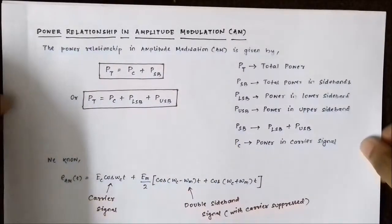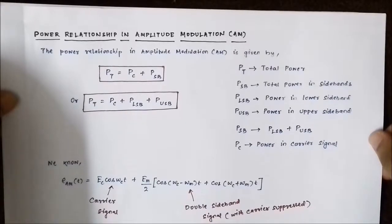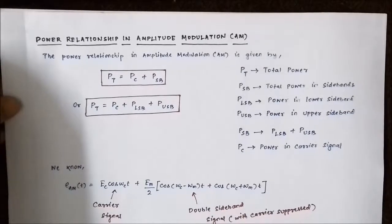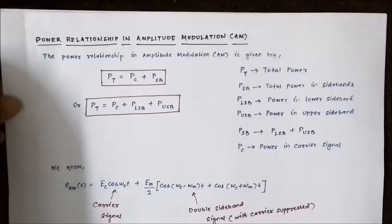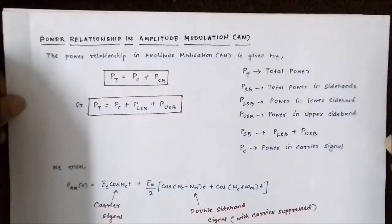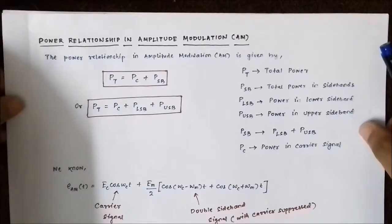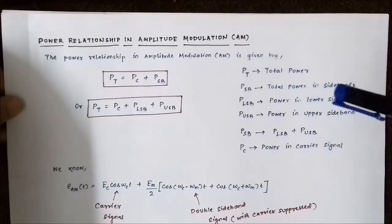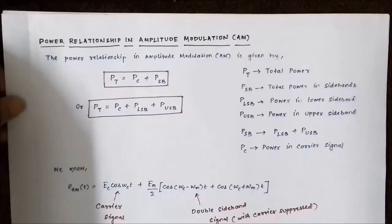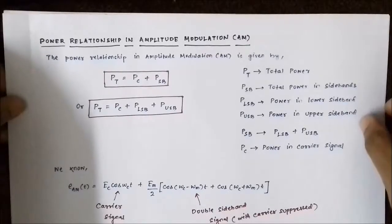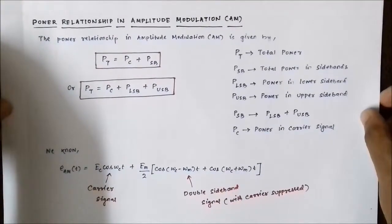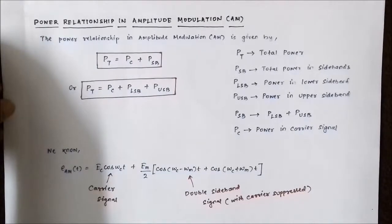Hello friends, welcome to Engineering Tutorial. In my previous video I discussed the concept of modulation index, sidebands, and bandwidth in amplitude modulation. In this video we'll be discussing the power relationship in amplitude modulation — that is, the power contained in the various sidebands and the carrier signal, along with the total power expression in the amplitude modulated signal.